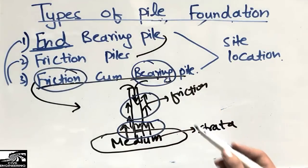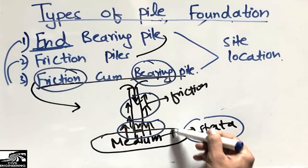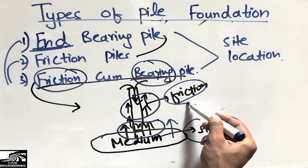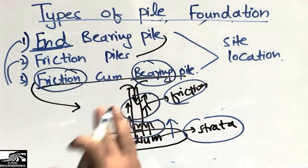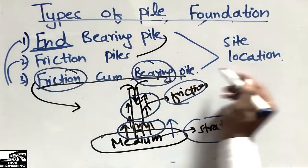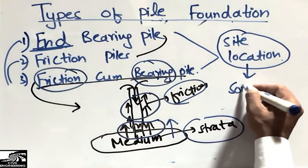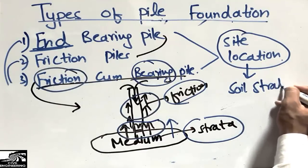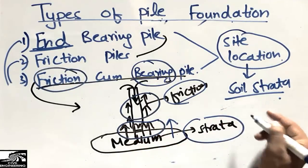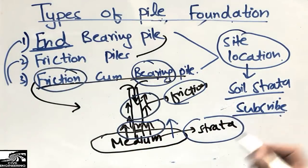In this type of pile, the strata is medium, so some resistance is provided by the end strata and some by friction. These were the three main types of pile foundation. We select the type of pile depending on the site location and the soil strata. Don't forget to subscribe to our channel for more civil engineering videos. Thank you for watching.